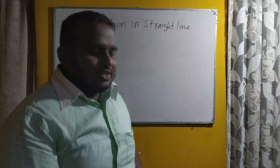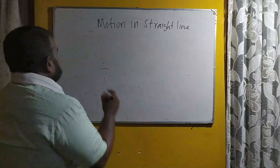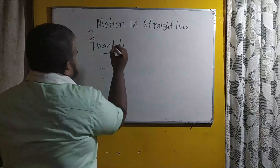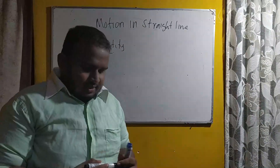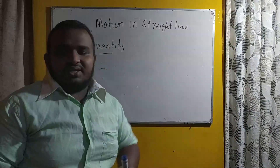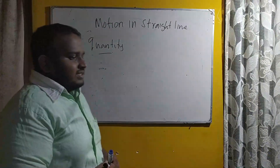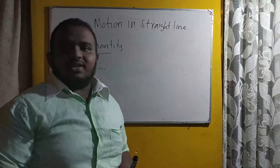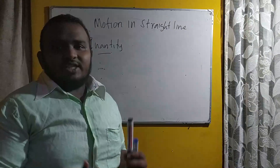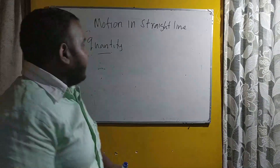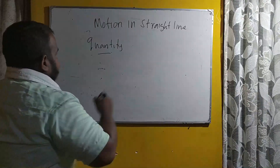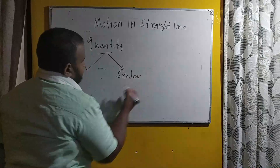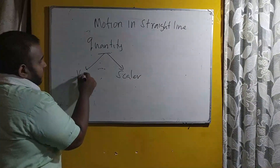Before going to the unit, I will introduce you to the term 'quantity'. A quantity is used to measure a thing. For example, if I talk about movement, I can measure it using distance, displacement, speed, or velocity. A quantity can be divided into two categories: the first is scalar quantity, and the second is vector quantity.